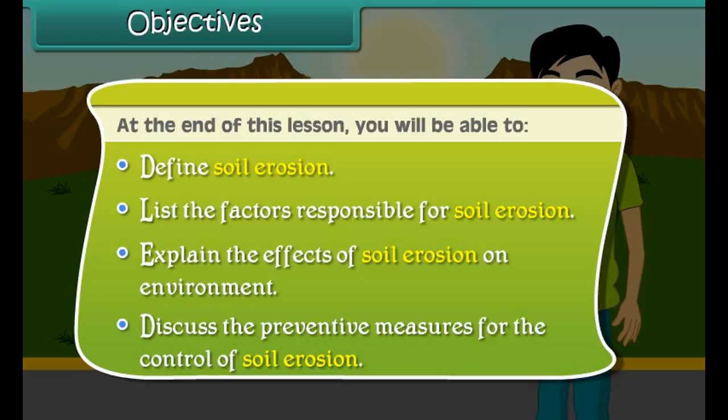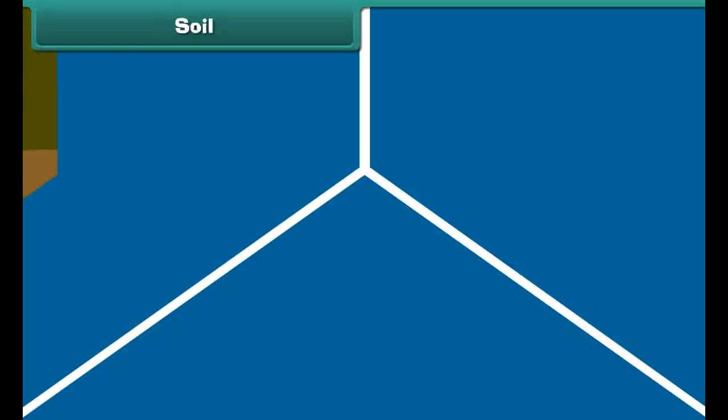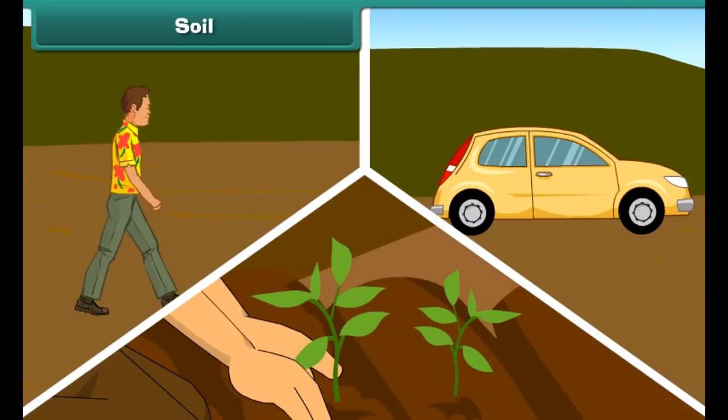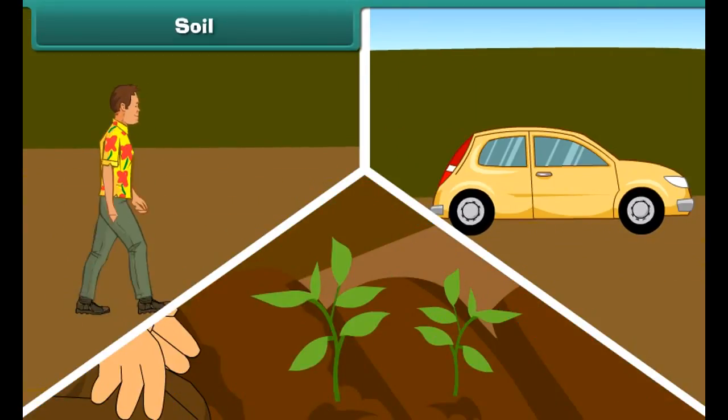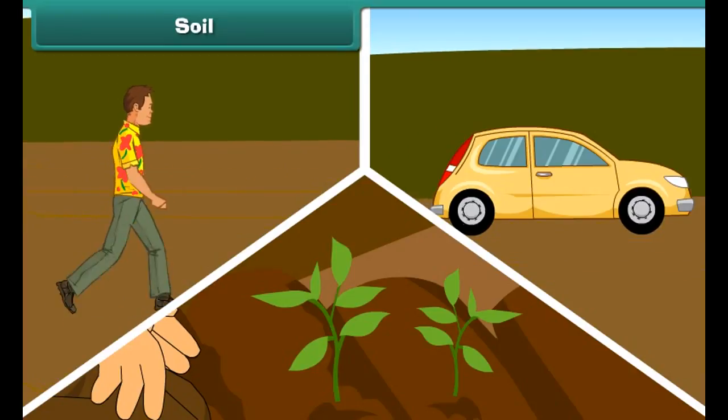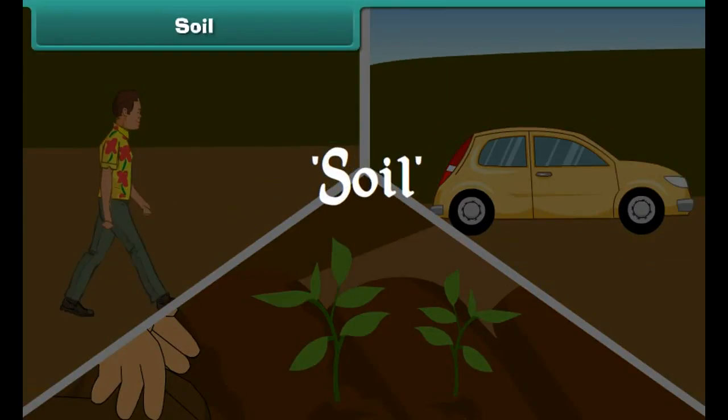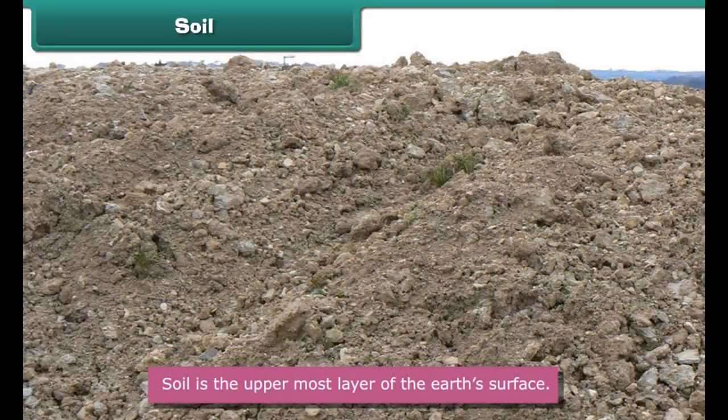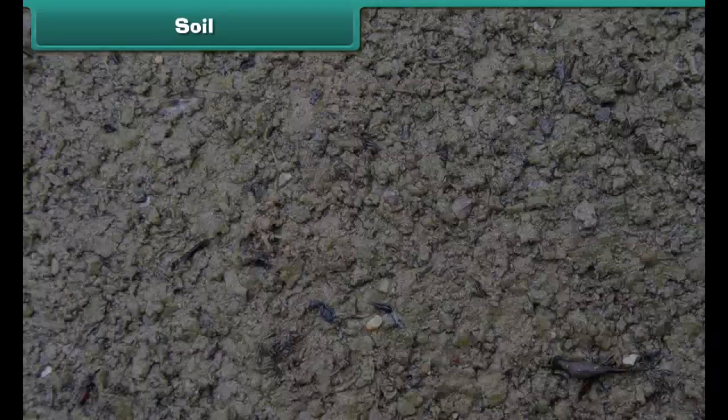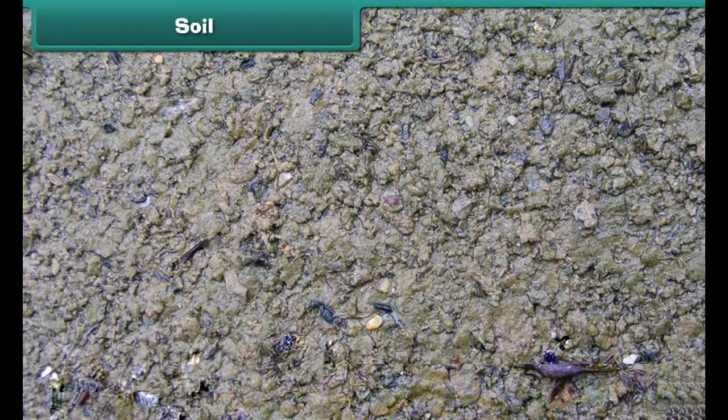It is everywhere. We walk on it, we drive on it, and we grow plants on it. Wondering what is it? It is soil. Soil is the uppermost layer of the earth's surface. It consists of a mixture of rock finely ground into powder, water, air, minerals, and a variety of living and dead life forms.